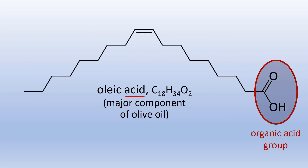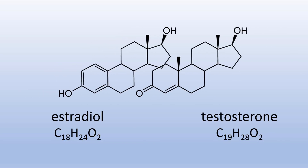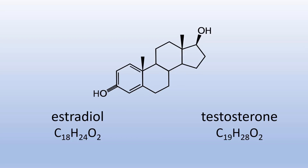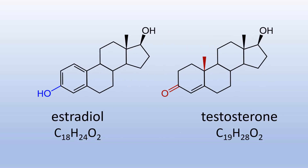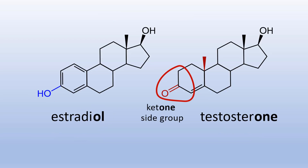Oleic acid is oil found in olives, and it is an acid due to the organic acid group shown here. The structures of one of the estrogens, estradiol, and testosterone can be easily compared using skeletal structures — they are almost identical with the exception of those atoms seen here in blue and red. Both of these molecules are synthesized from cholesterol in the bodies of both sexes. There are two alcohol side groups designated with the suffix OL, thus the derivation diol. Testosterone has the organic ketone side group, which is reflected in the name testosterone.